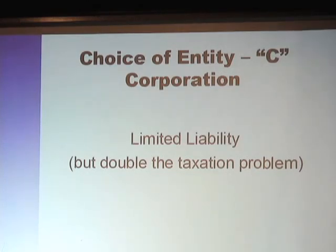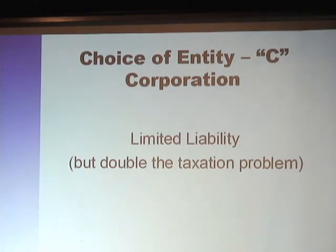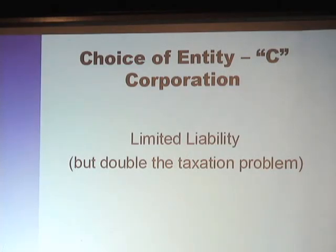There is a double taxation problem with C corporations. Piercing the corporate veil means that a plaintiff suing you would try to say the corporation is this person's alter ego — they are one and the same and there should be no limited liability protection because there was no separate being. The IRS and the laws of the United States treat a corporation as a person — it is defined as its own separate being. Respecting corporate formalities makes it far more difficult for a plaintiff to claim otherwise.